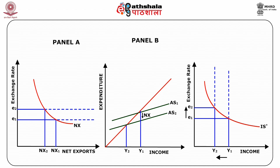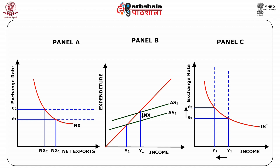Now consider panel B, which shows the usual Keynesian cross. Using panel A and panel B, we derive the IS star curve in panel C. Consider an increase in exchange rate from E1 to E2. It lowers net exports from NX1 to NX2, which shifts the planned expenditure schedule downward from AS1 to AS2, reducing income from Y1 to Y2. Thus, we have two points A and B, and joining these we obtain the IS star curve in panel C.